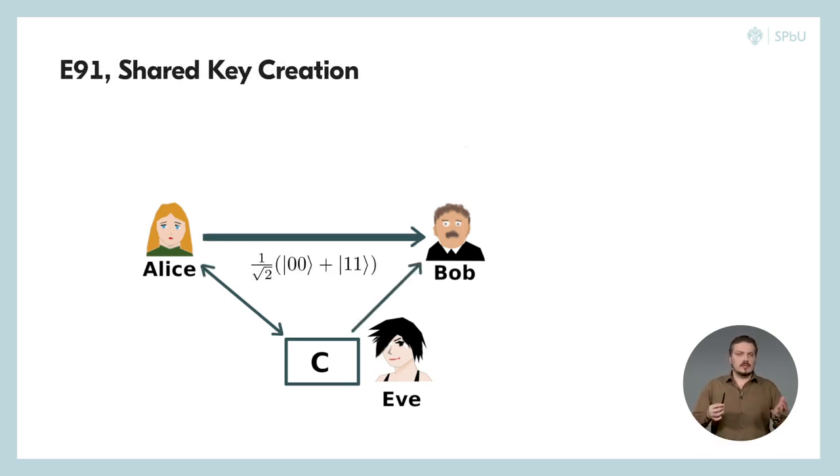So, Alice calls this key creation center and tells that she wants a key shared with Bob and the length of the key must be, say, 2000 bits. For each bit, C creates a pair of entangled photons in the state 00 plus 11. One of these photons then goes to Bob and another to Alice.